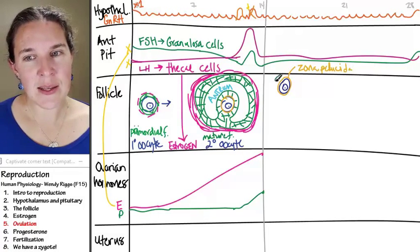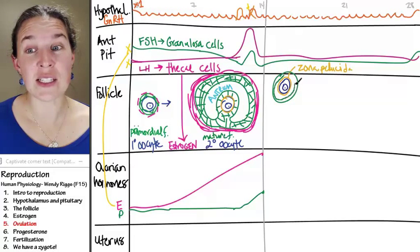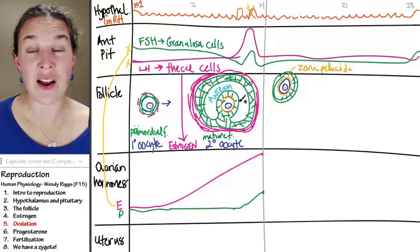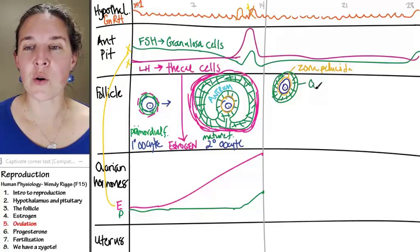In addition to this, some of the granulosa cells, not all of them, but look at these surrounding, something immediately surrounding the oocyte, they come along, too. And this is called the corona radiata.